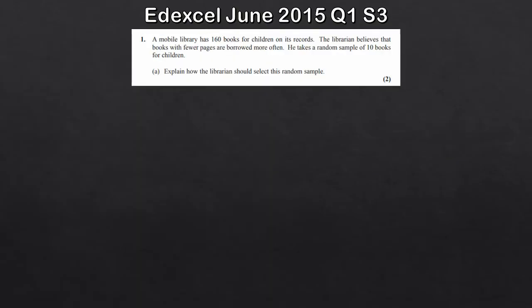Then we move on to this very last question here, again another past paper question from the old spec. We've got a mobile library that has 160 books for children. A librarian believes that the books with fewer pages are borrowed more often, so he takes a random sample of 10 books for children. Explain how the librarian should select this random sample. This is actually really really short, it's going to take probably about 30 seconds at most. To do a random sample, all we do is assign the books a number from 1 to 160. We've got 160 books in total.